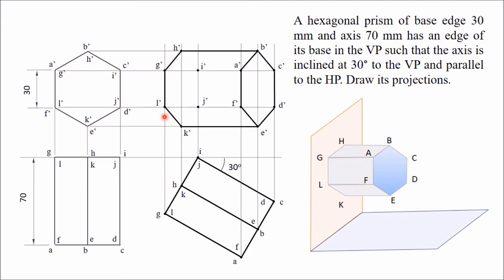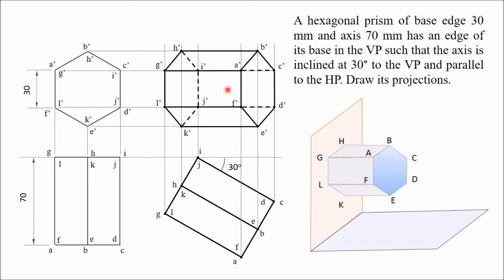I have drawn all outer lines with solid lines. Now, vertices I and J are not visible — they are hidden behind the faces. Therefore all lines passing through these points will be dashed lines. So: I is connected to H, I is connected to C, I is connected to J, J is connected to K, and J is connected to D. Join all these as dashed lines. Now your front view is completed.